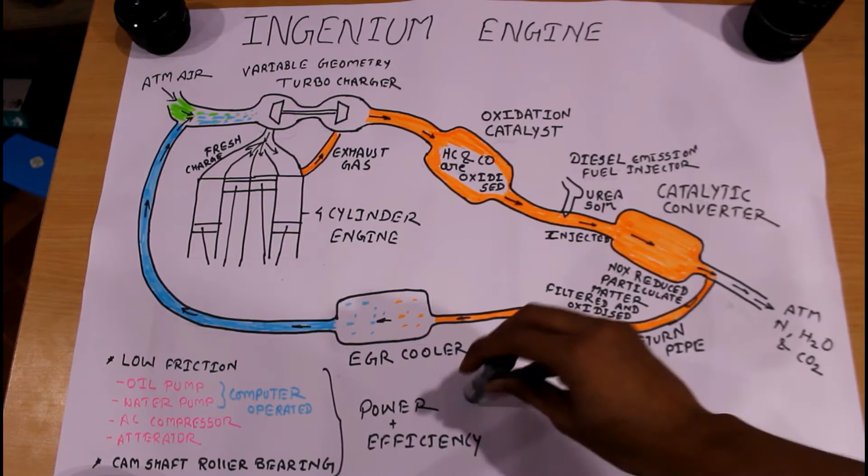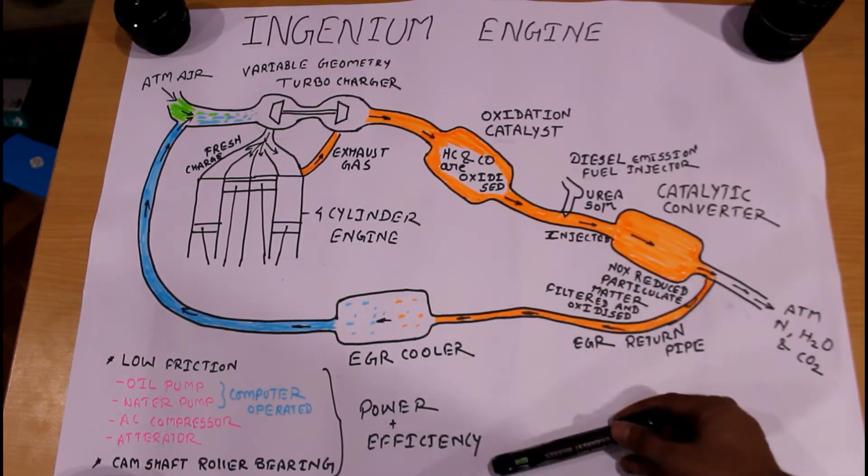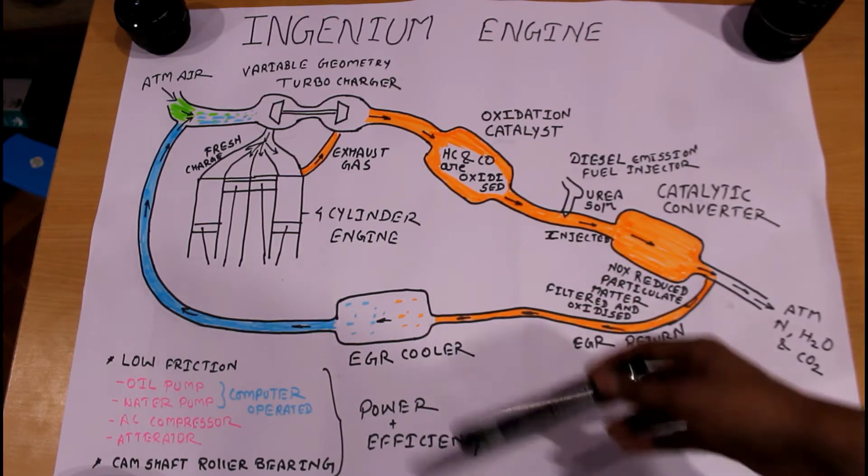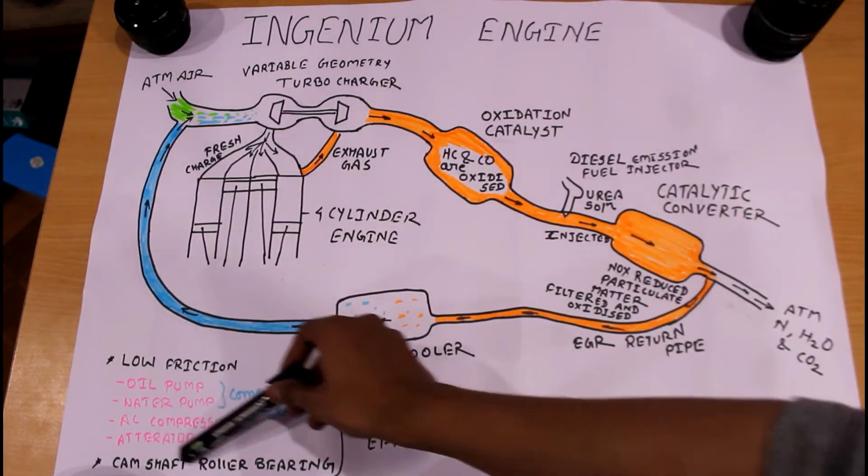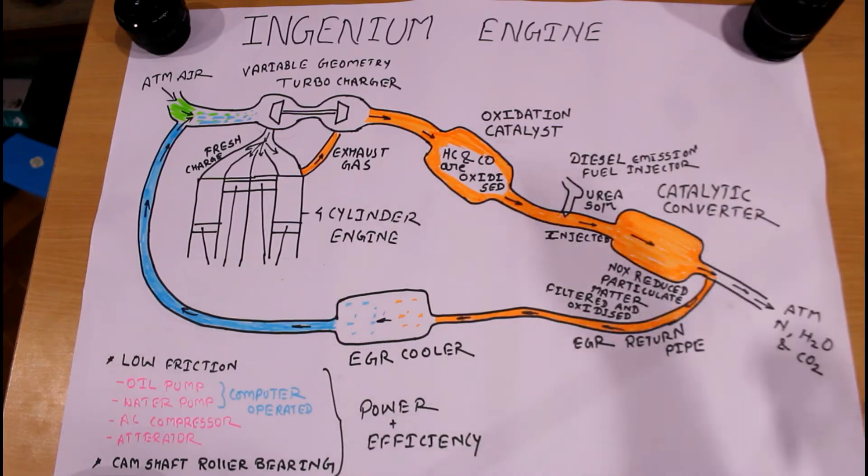Because of the Ingenium engine, we get a very high amount of power and efficiency due to incredibly low friction and parasitic losses. This is because of the very highly advanced camshaft roller bearing and computer operated oil pump and water pump. Because of this, very low amounts of friction are generated inside the engine cylinder.